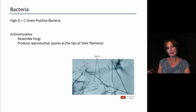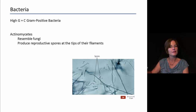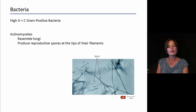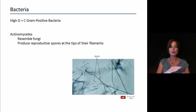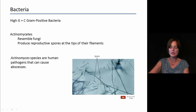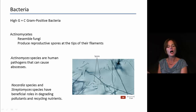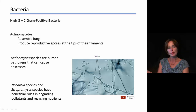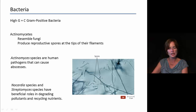The actinomycetes are unusual bacteria because they resemble fungi, though we know they are not fungi because they have prokaryotic cells rather than eukaryotic ones. They reproduce using reproductive spores located at the tips of their filaments — parent cells producing offspring spores. Some groups cause human disorders, most commonly abscesses. However, Nocardia and Streptomyces have beneficial environmental roles, as they can degrade pollutants and recycle nutrients from dead organisms — important environmental functions.